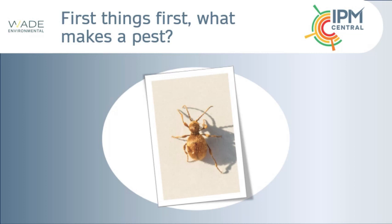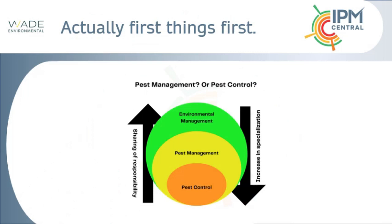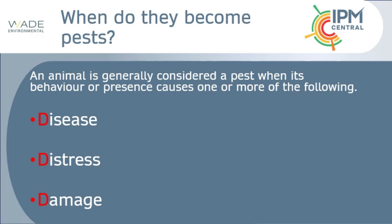First things first: a pest is defined by one of three categories — the propensity to cause damage, to cause distress, or to spread disease. All of the animals we are talking about today have the capacity to fulfil one if not multiple of these factors.